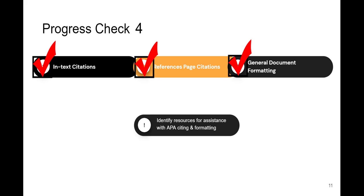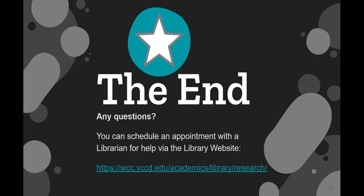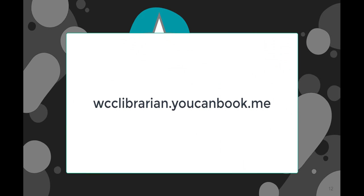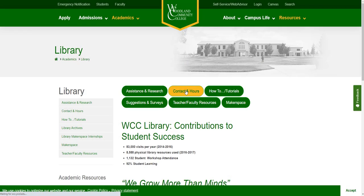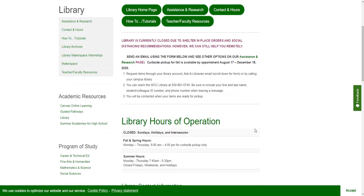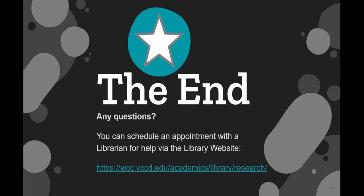We briefly covered document formatting, reference page citations, in-text citations, and resources to support your creation of an APA-style project. For more examples and details, watch or attend the APA 7th edition basics workshop. You can also get assistance from a human, such as a librarian, to help you with APA style. You can make an appointment that suits your schedule through our online booking system. Quick questions that require limited conversation can be asked using the Ask a Librarian form. We hope you find this brief overview to APA 7th edition helpful. The WCC Library is here to help you, regardless of your location or world events.